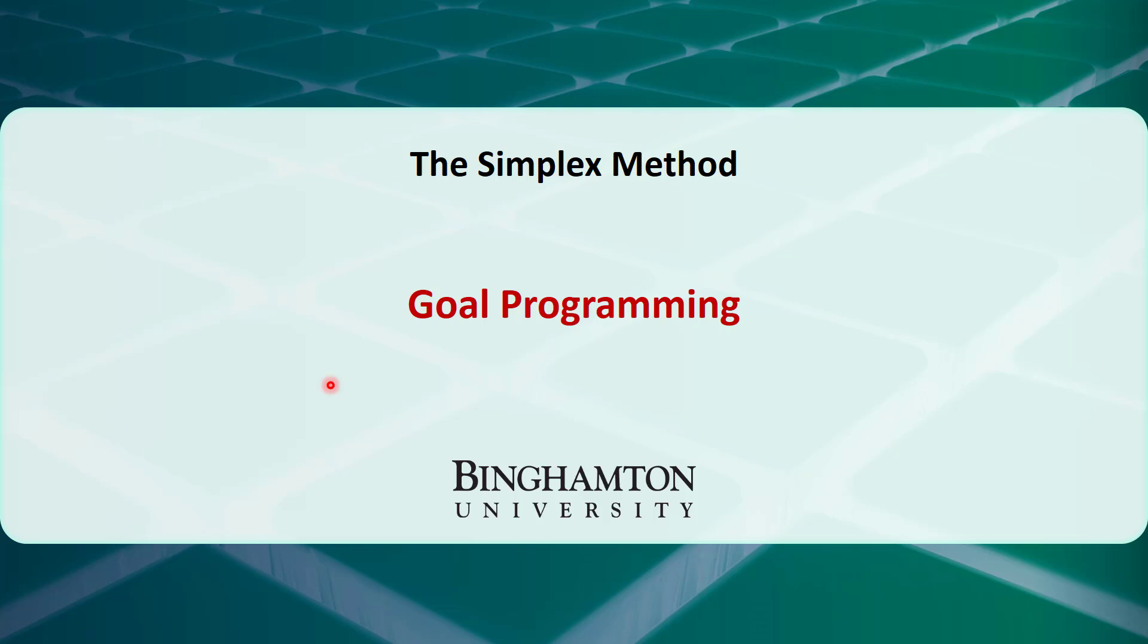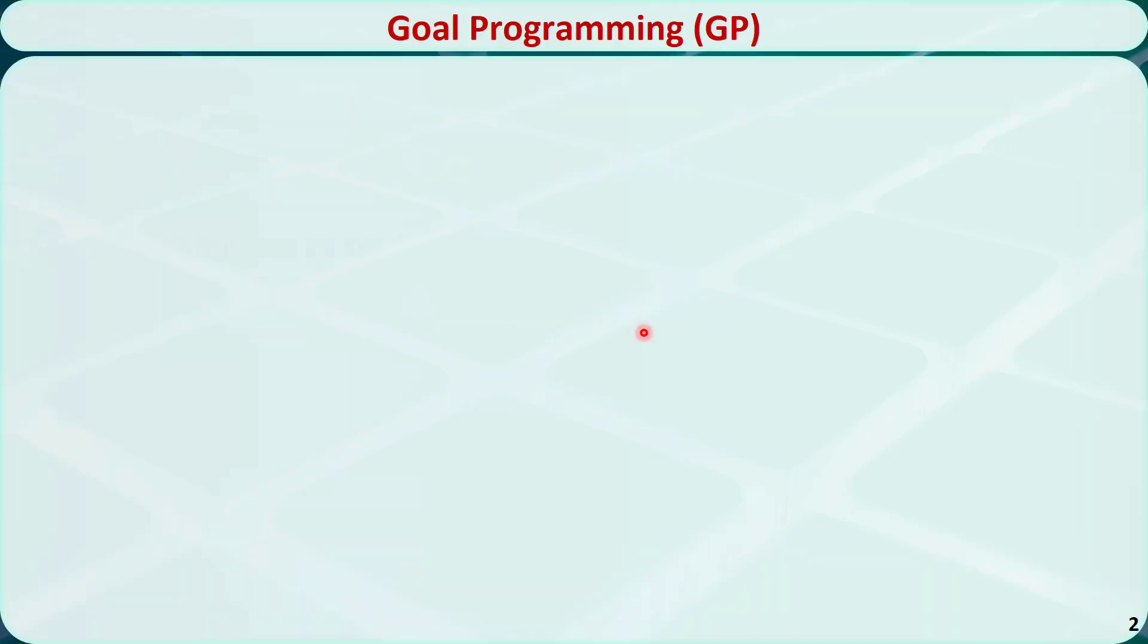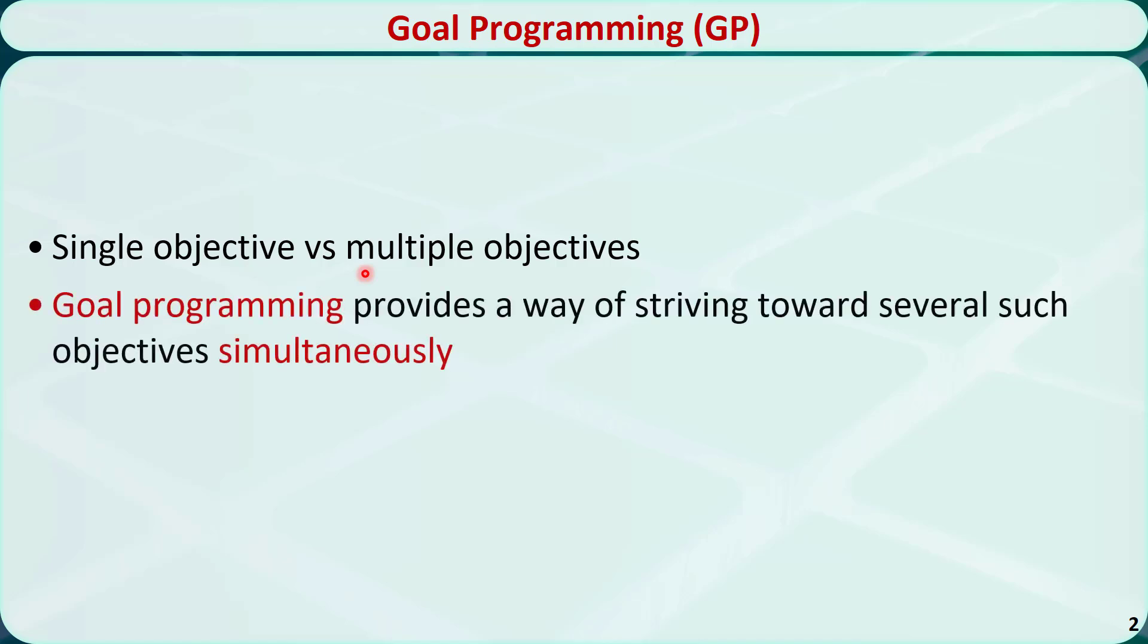In this video, I will talk about how to formulate goal programming problems. All the linear programming problems we have introduced so far have only a single objective function. In real-world applications, we may face multiple conflicting goals, and we may not be able to meet all the goals simultaneously.